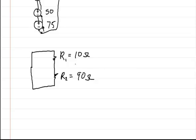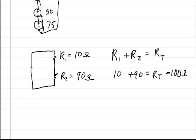And then since they're in series you could just add them right up. So it's R1 plus R2 and that's equal to RT, the total resistance of the circuit. So that's just 10 ohms plus 90 ohms which is equal to RT which is equal to 100 ohms.